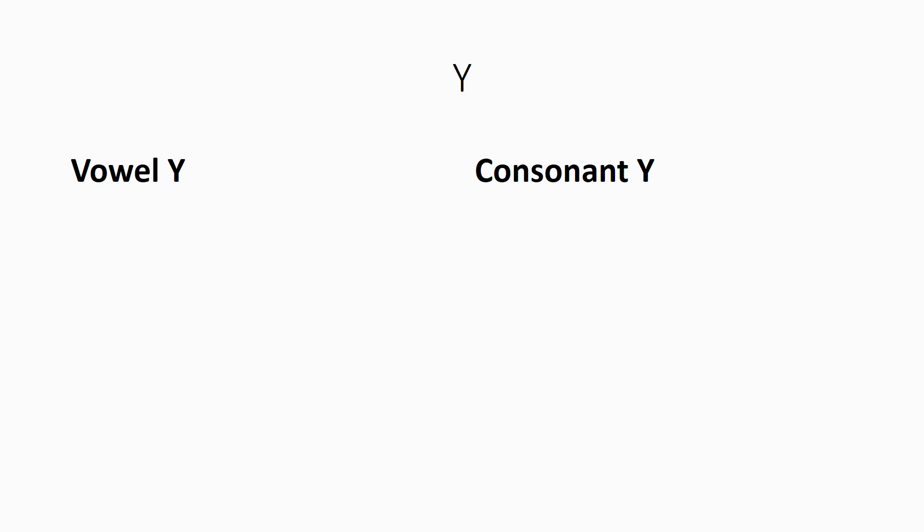When is Y a vowel and when is it a consonant? It's simple. If Y is pronounced E, I, or I — just like the vowels we saw — then it's a vowel. Like in only. If the letter Y comes at the end of a word like this, it is always a vowel. Or cyber. Or symbol. Or cryptic. Notice most of them function like the letter I. So, cyber — long I. Symbol — short I. And if it comes at the end or middle of the word, just not right at the beginning, it is a vowel.